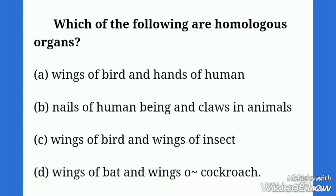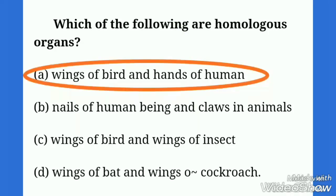The next question is: which of the following are homologous organs? The organs that have same fundamental structure but different in function are known as homologous organs. Here the correct option is number A.